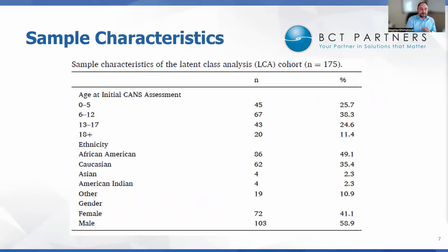This is an overview of the sample characteristics. There was quite an age range, with most of the kids falling in the six to twelve age range. Roughly half of the population was African-American. The national average in foster care for African-American youth is about 23%, so while this is well above that average, it is consistent within Maryland, where the Kennedy Krieger Institute resides. The race and ethnicity breakdown is consistent with Maryland's overall foster care numbers.